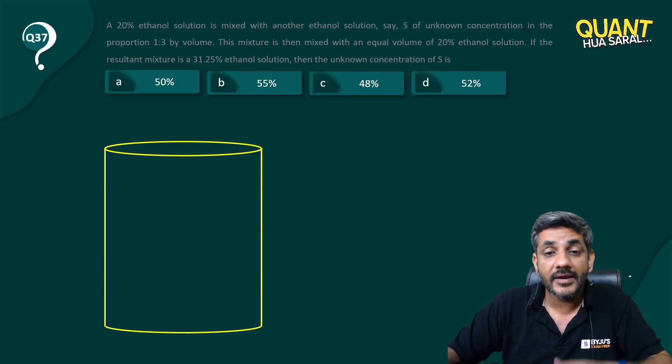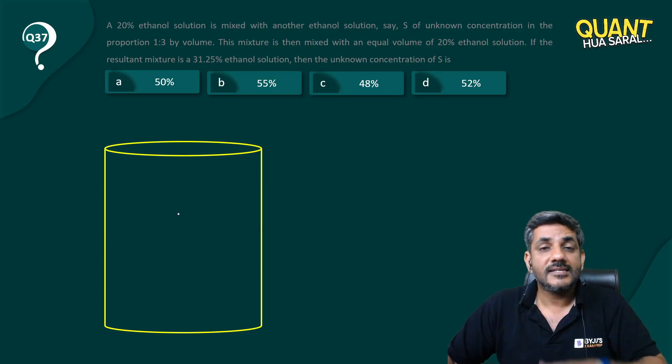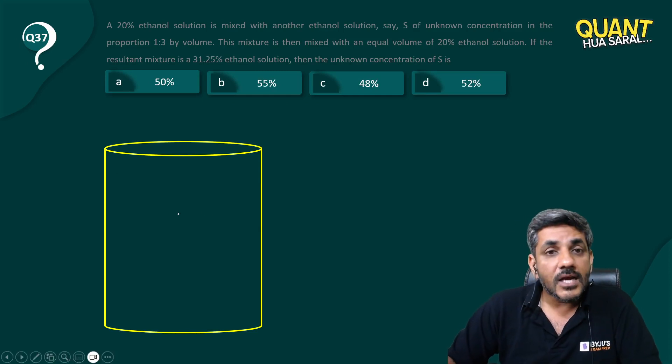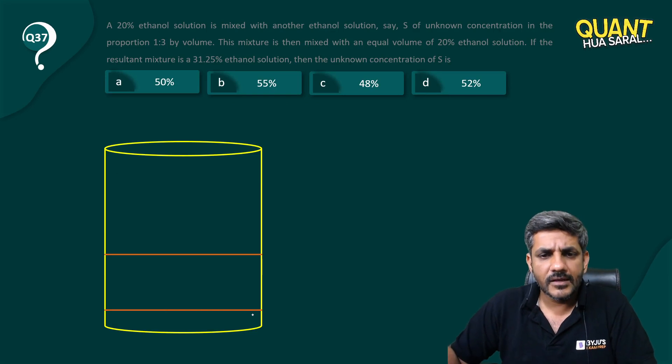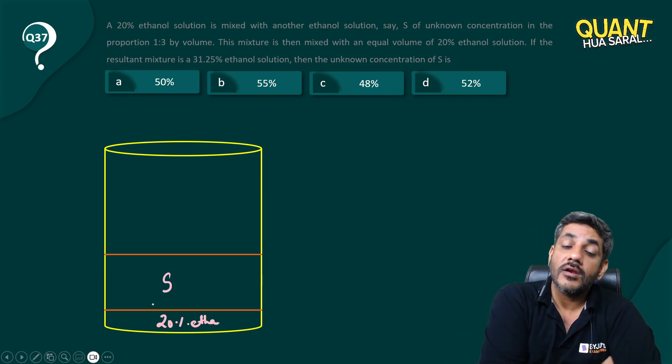Here is the container. There are two mixtures mixed in a ratio of 1:3. So this is the mixture with 20% ethanol, and this is mixture S. We do not know how much ethanol is in that second mixture. 20% ethanol is in the first mixture, which is one part.